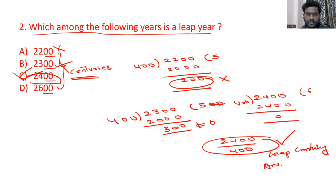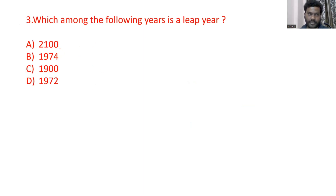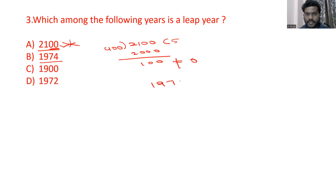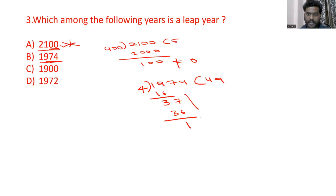Now the practice question — which among the following years is a leap year? Option 1 ends in two zeros, so it is a century: 2100 divided by 400 gives 400×5=2000, remainder 100 — not equal to 0, so 2100 is not a leap year. Now consider 1974: it is a normal year, so divide by 4. 4×4=16, remainder 3; 4×9=36, remainder 1; 4×3=12, remainder 2. Not equal to 0, so 1974 is not a leap year.